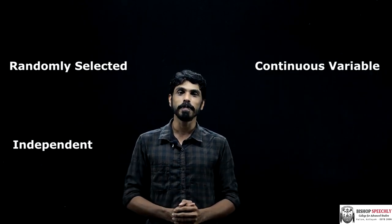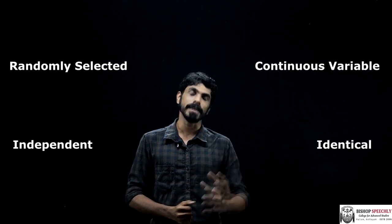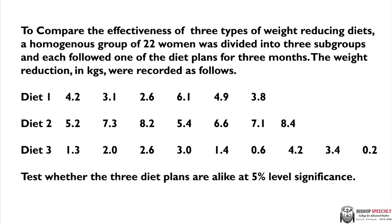To compare the effectiveness of three types of weight reducing diets, a homogeneous group of 22 women was divided into three subgroups and each followed one of these diet plans for three months. The weight reduction in kilograms were recorded as follows.